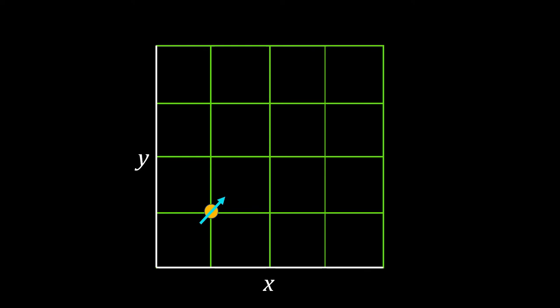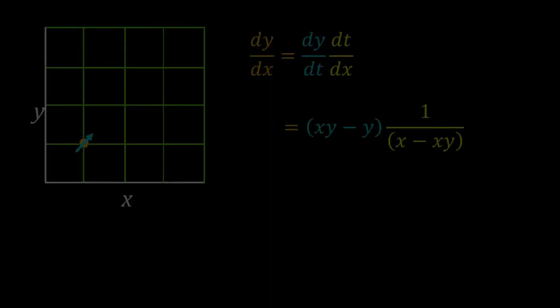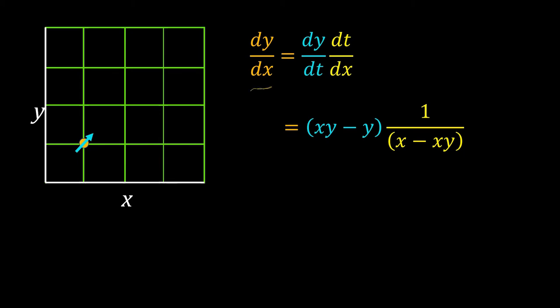This arrow will represent the direction of change of X and Y from that position. The slope of this arrow is equal to dy/dx. We can calculate dy/dx from the system of ODEs.